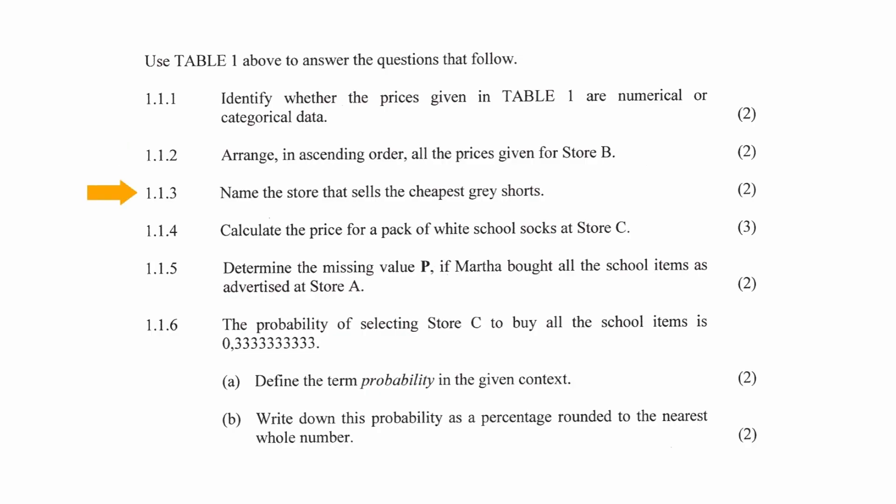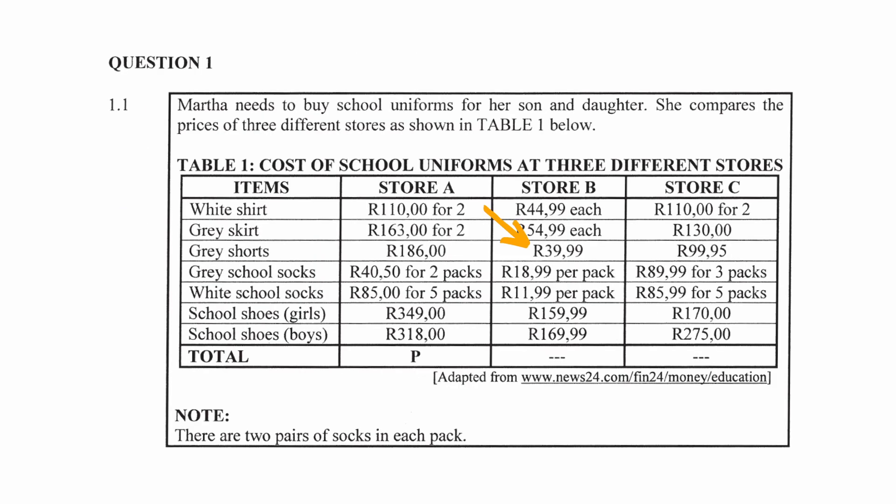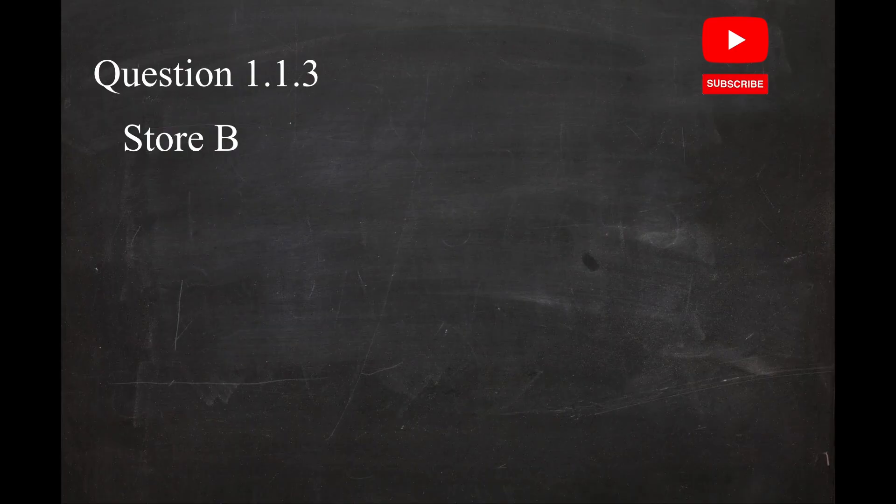In question 1.1.3, you have to give the name of the store that sells the cheapest grey shorts. From the table, the store that sells the cheapest grey shorts is Store B.